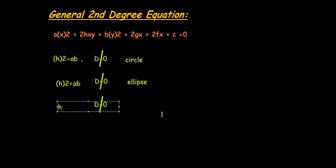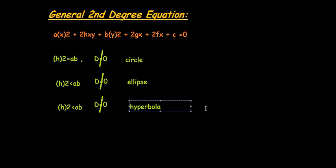And when H squared is greater than AB and delta is not equal to 0, this equation will represent a hyperbola. I previously made a mistake, this equation will represent a parabola.